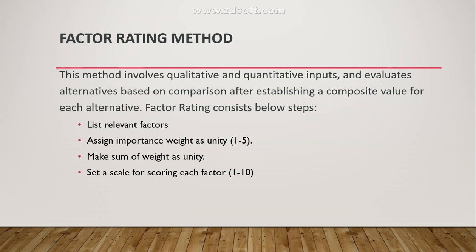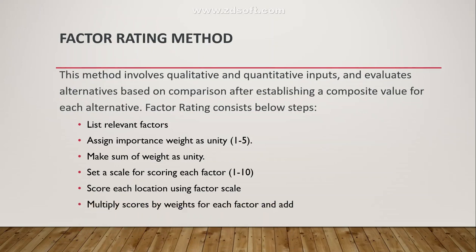The scale for scoring each factor is set pertaining to the different localities or alternatives for plant location. For this example, I have used a scale of 1 to 10. Based on your chosen factors and their assigned weights, you score each location using that factor scale. Then you multiply each score by its corresponding weight and add them all up to get a total weighted score for each location.